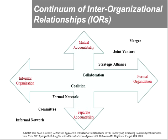Heather Creech of Universalia uses a term called interorganizational relationships that really resonates with me as an overarching construct to define situations where multiple organizations come together to work towards some common end. As you see on the graph, there are two scales: an up-down scale around accountability and a left-right scale on formality. I'm going to be focusing primarily on the bottom area — the informal, separate accountability area — which includes coalitions, formal networks, and informal networks.